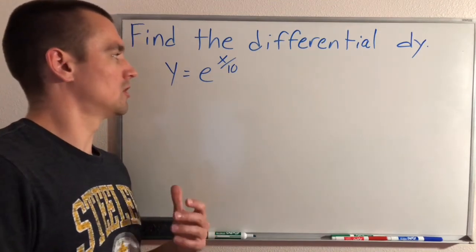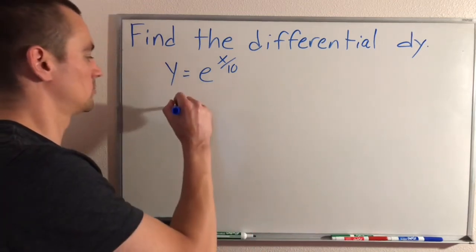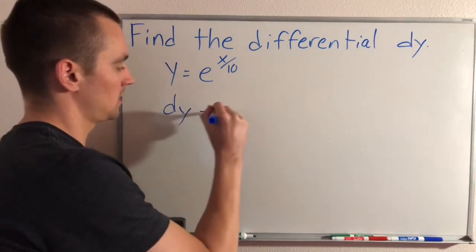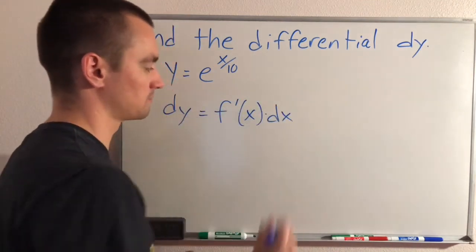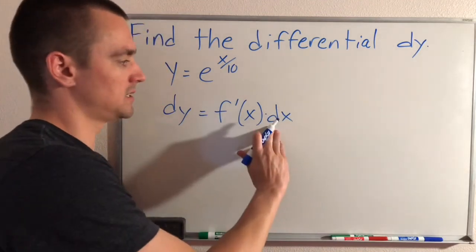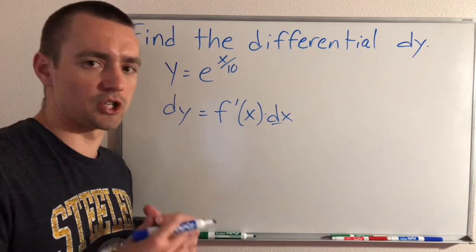So first of all, to find the differential, all we really need to do is use basically the formula for what a differential is, which is dy equals f prime of x times dx. So this dx here,